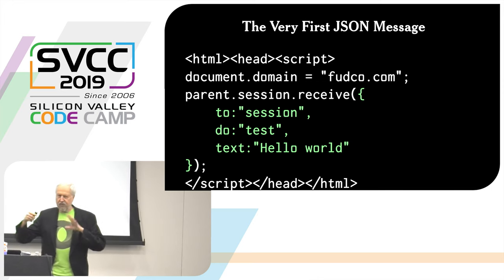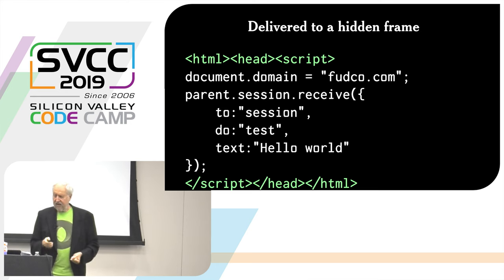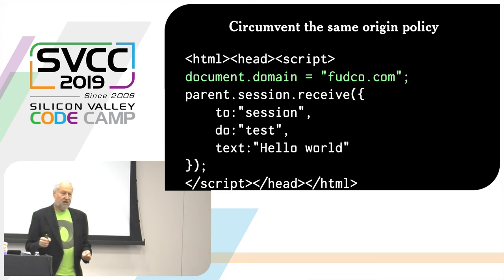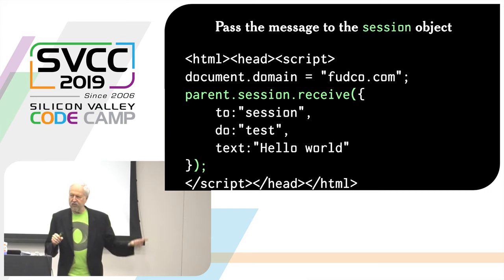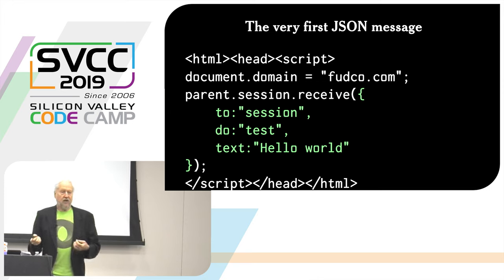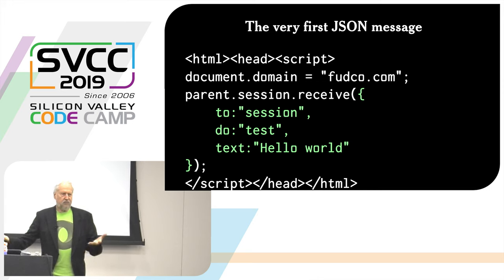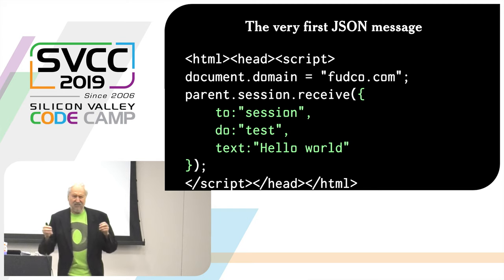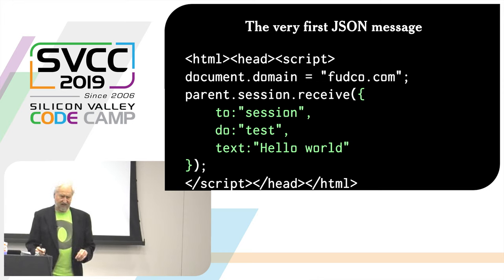The way it worked was we embedded it in an HTML document inside a script tag. The first thing the script did was set the document.domain to fudco.com — FUDCO was and still is the name of Chip's personal server. Then we would call the receive method of the session object in the outermost frame, and it would receive the message. In this case, the message is addressed to the session, which could dispatch that message to another object. It's going to execute its test method, and the text it's going to consume is 'hello world.'